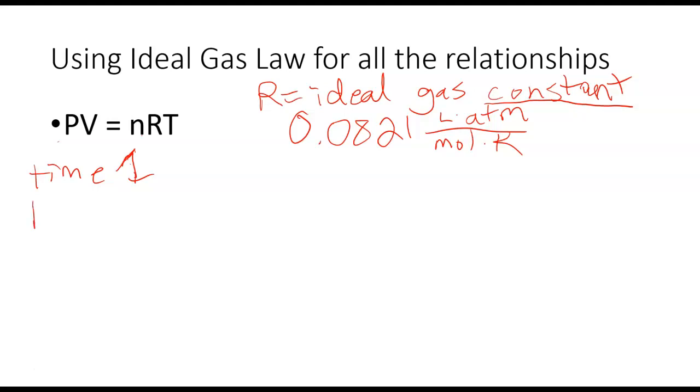At time one, I'm going to rewrite this equation as P1V1 equals n1RT1. Now notice I did not put a one on R because R is constant. It's constant, it's going to be the same throughout. It kind of gives us a relationship.